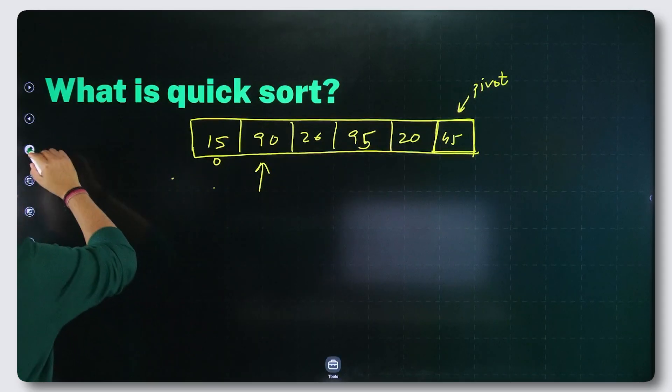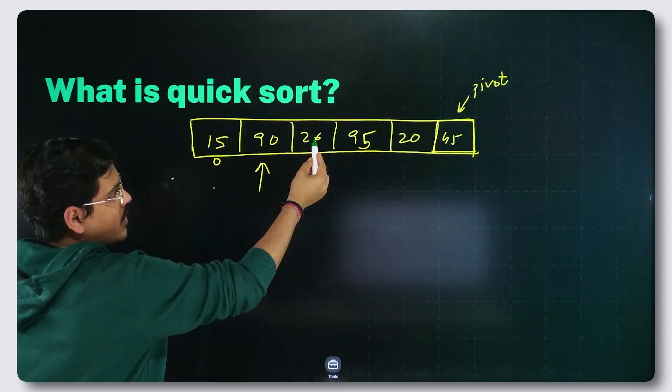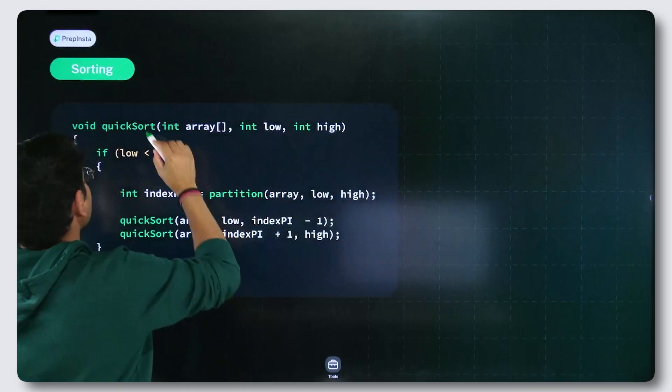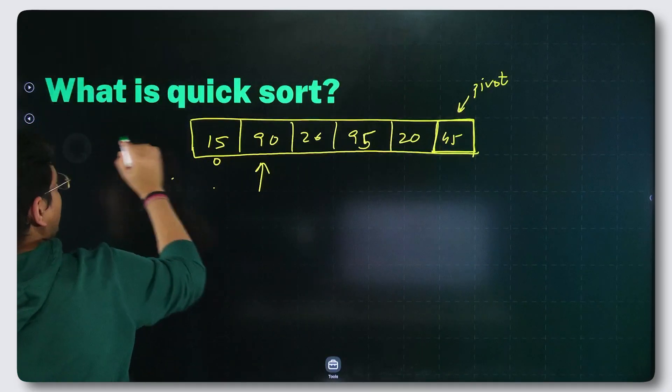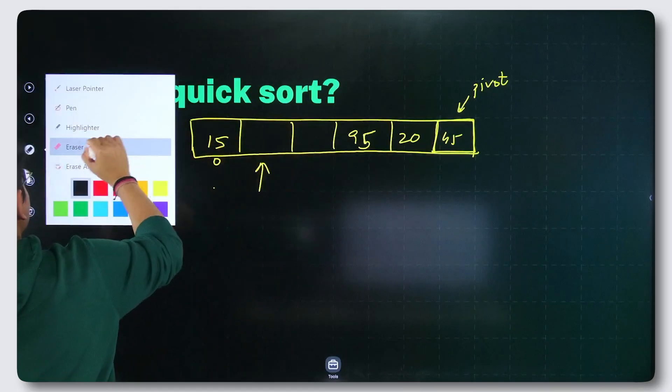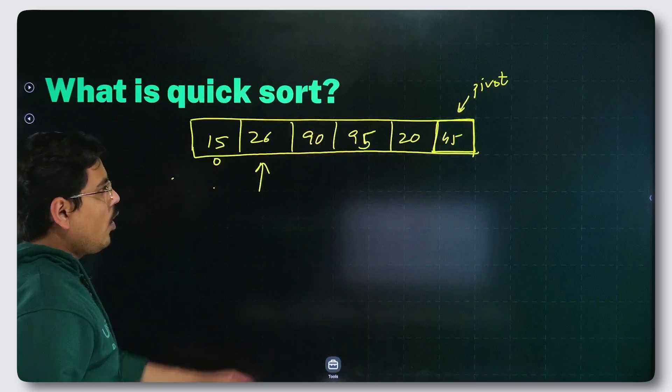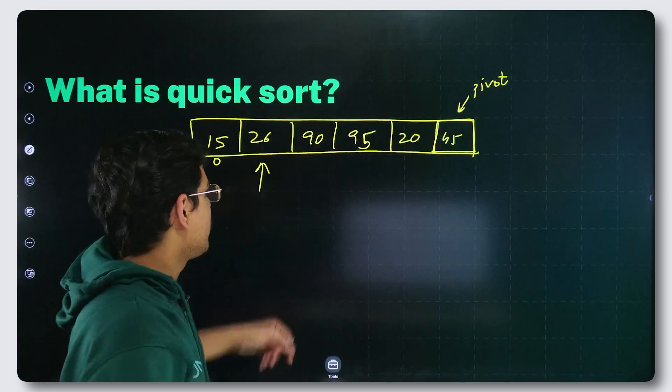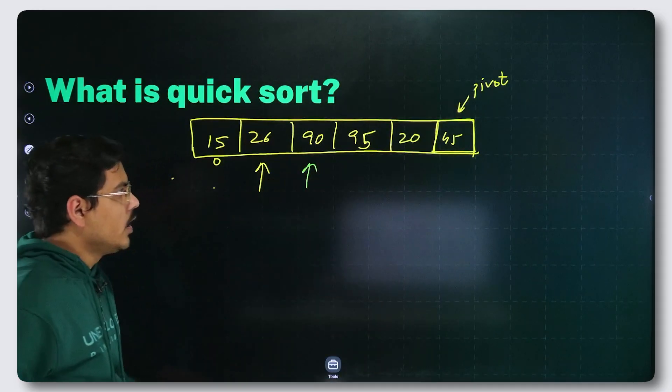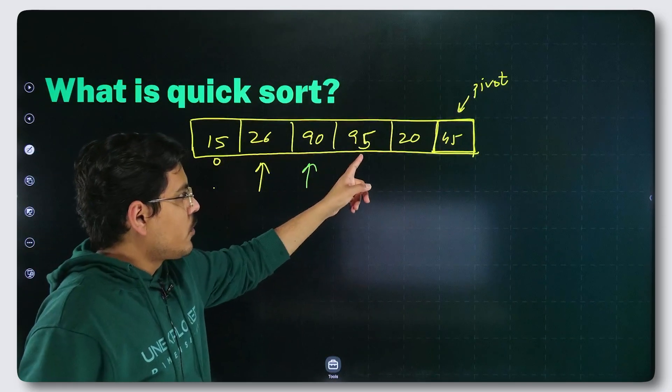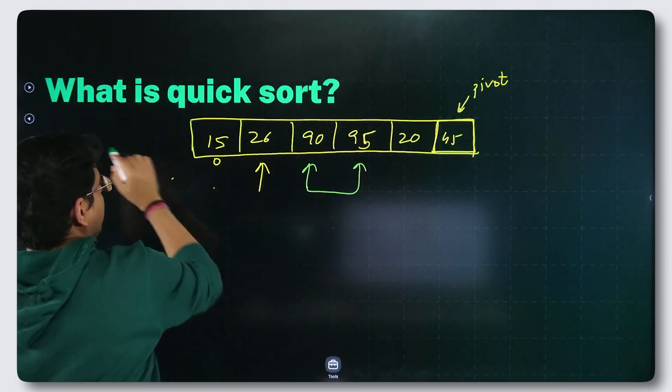So what you will do is, you swap these two because we were on 26. So 26 should be swapped. We will swap it out. Let us swap them. 26, 90. Now if you go further, 26 was here. So basically, the reference green pointer that I had told you was here. So now, this goes further and this checks. Now it comes here and it checks 95. 95 is greater than 45.